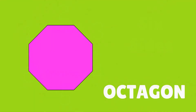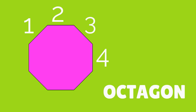Now let's count the sides of an octagon: 1, 2, 3, 4, 5, 6, 7, 8. An octagon has 8 sides. Bye.